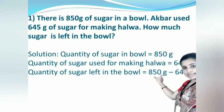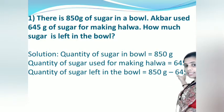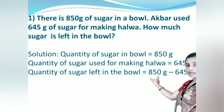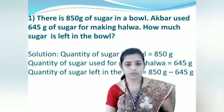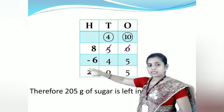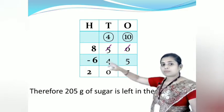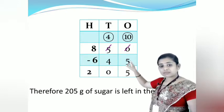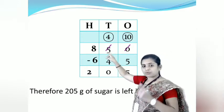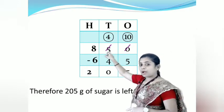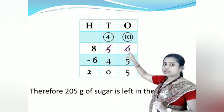Total quantity in the bowl is 850 grams minus quantity used for making halwa, which is 645 grams. Begin subtraction from the ones place. 0 minus 5 is not possible as 5 is greater than 0, so we take a borrow from the next higher place. The 5 in the tens place reduces by 1 to become 4, and 1 borrow means 10 is added to 0.